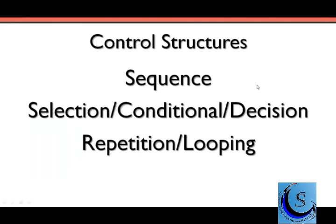Now that we've finished looking at all the repetition structures, I wanted to briefly summarize all the control structures we've been exposed to. When we first started programming, we looked at just writing one instruction after another — the default case of writing things in sequence. Then we started looking at cases where if something was true we may execute some set of statements, else execute something else or nothing at all. We looked at multiple alternatives with the else-if — this is what we call selection, or conditional statements or decision statements. And what we've just finished looking at is this idea of repetition — being able to repeat some set of instructions over and over again.